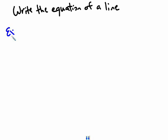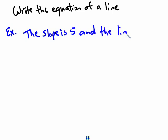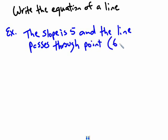For example, the slope is 5 and the line passes through point (6,8). Write the equation.